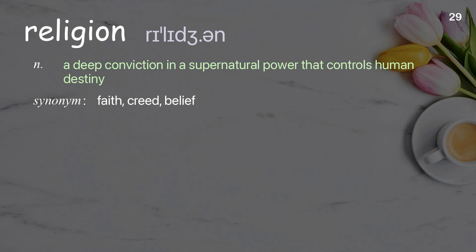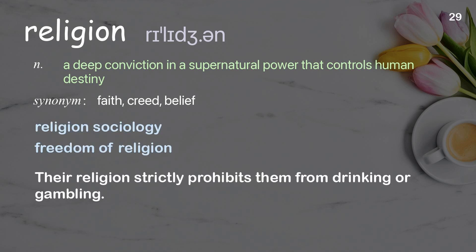Religion: A deep conviction in a supernatural power that controls human destiny. Examples: Religion sociology. Freedom of religion. Their religion strictly prohibits them from drinking or gambling.